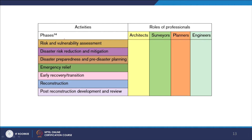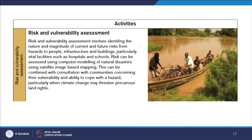All seven phases have been listed out by time and across four different professionals — architects, surveyors, planners, and engineers. This is the kind of framework which the guide tries to describe. Now let us look at a few activities. What are the activities that are included in the risk and vulnerability assessment?